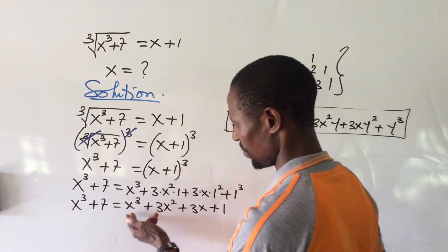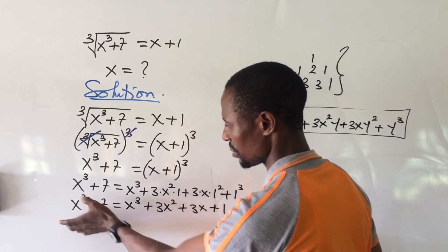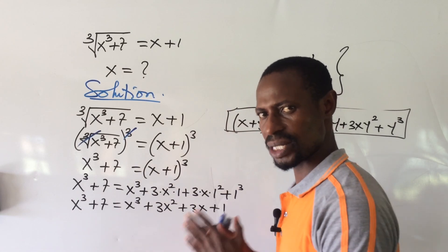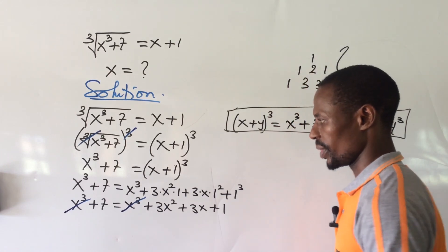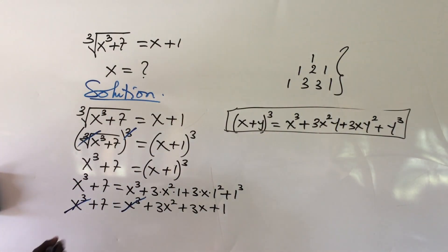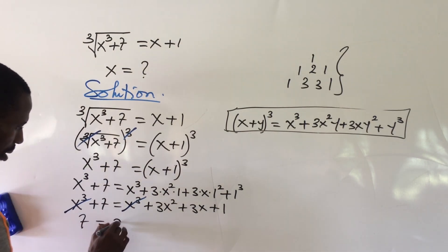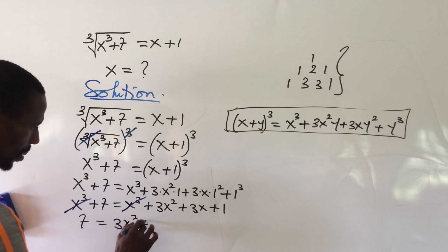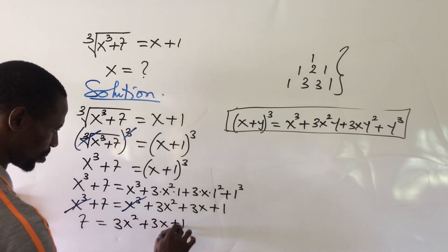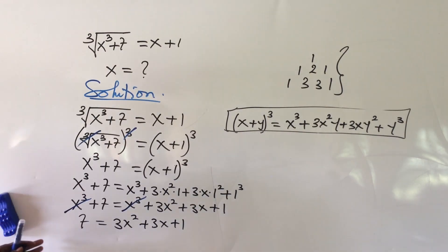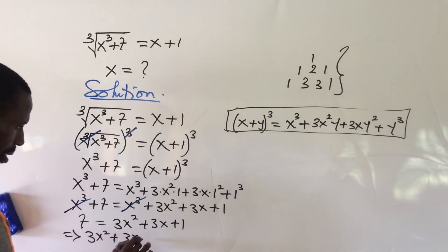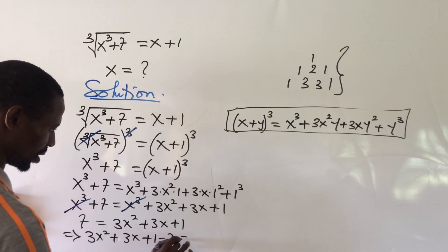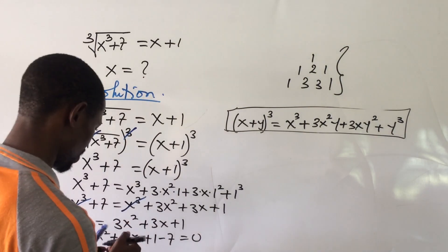We have x³ on both sides, so they cancel. We are left with 7 equals 3x² + 3x + 1. Rearranging, this implies 3x² + 3x + 1 − 7 = 0.